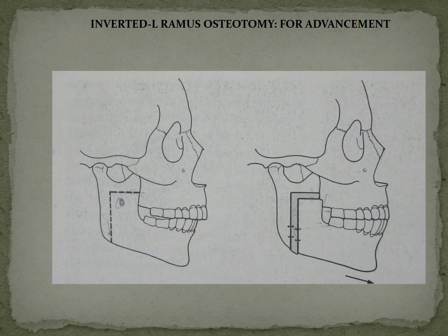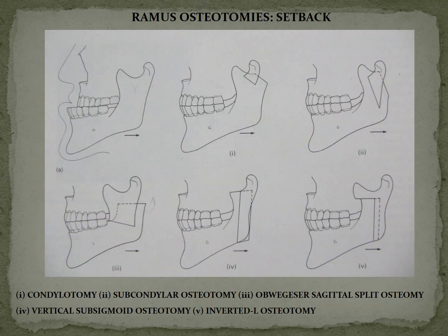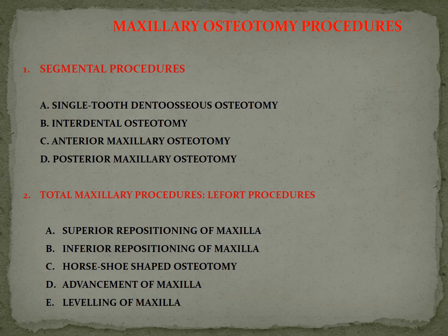Various ramus osteotomies for advancement include: sagittal split osteotomy, inverted L osteotomy, vertical subsigmoid osteotomy, C osteotomy, and arching osteotomy. For setback, procedures include: condylotomy, subcondylar osteotomy, oblique/sagittal split osteotomy, vertical subsigmoid osteotomy, and inverted L osteotomy. In subapical osteotomy, the fragment of bone involving the teeth and alveolar bone is separated from the rest.